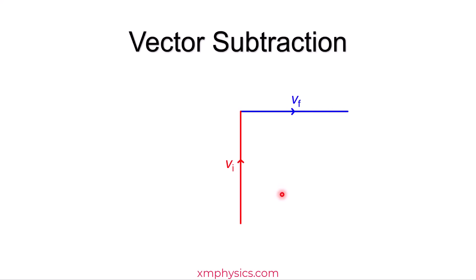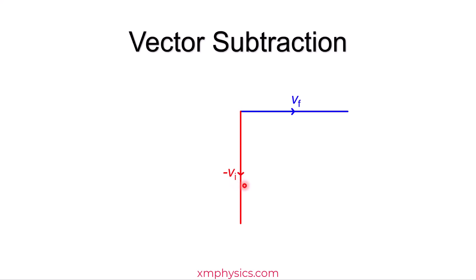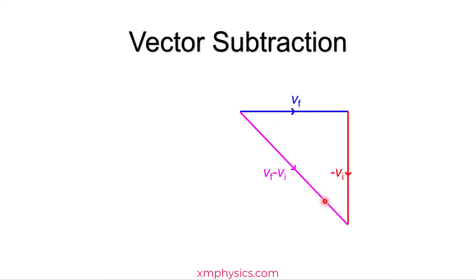What we want is the change in velocity, so we have to take the final velocity minus the initial velocity. To subtract the initial velocity, you've got to flip it around first. Now this vector represents negative initial velocity. Then as usual, join them up — start to start.